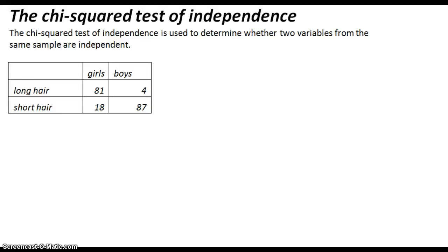Hello and we are back. We're going to be working on the chi-squared test of independence and learning how to use the Casio FX9860 to calculate the chi-squared values. The chi-squared test of independence is used to determine whether two variables from the same sample are independent.